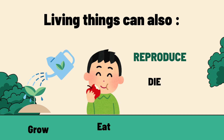Living things can grow — even plants, which are a part of living things, can grow bigger and bigger. Living things can also eat. They give birth to their young ones — this is called reproduction — and they can also die.